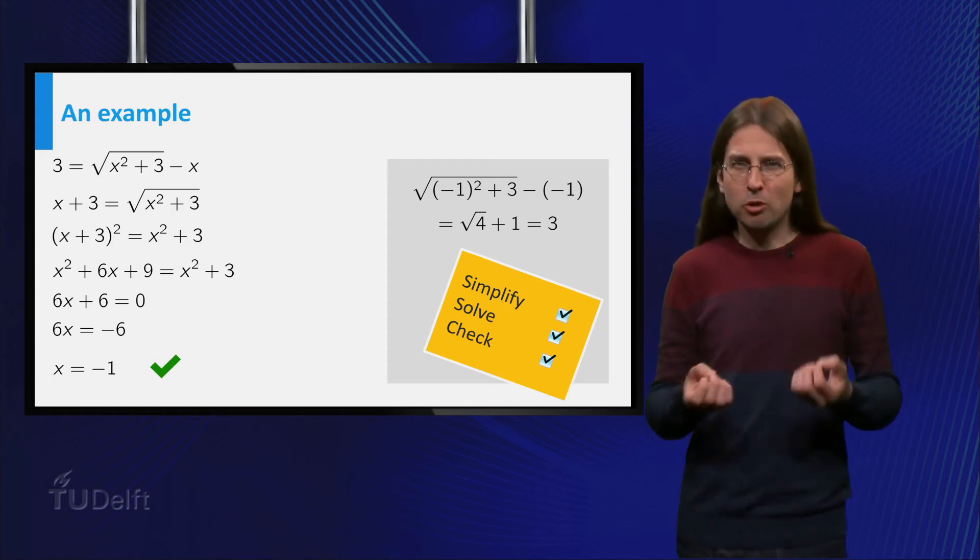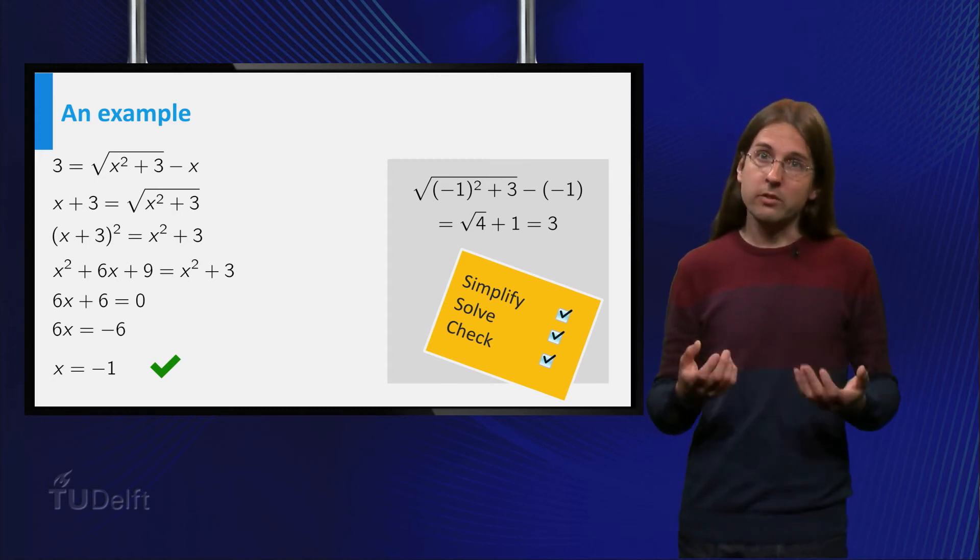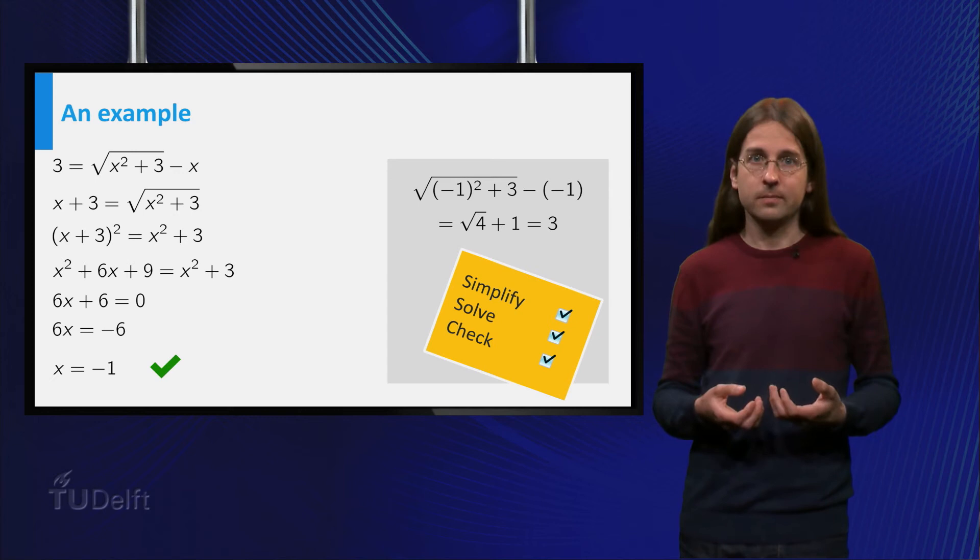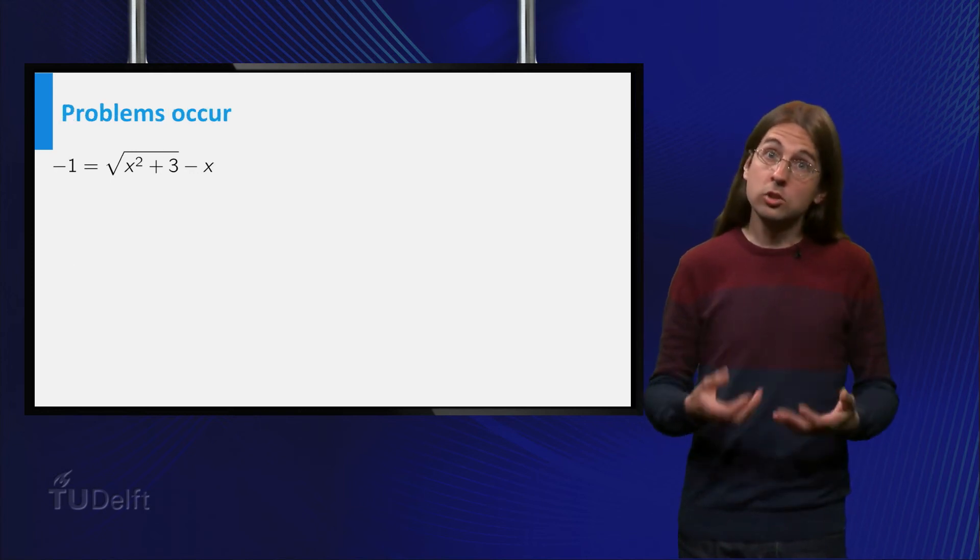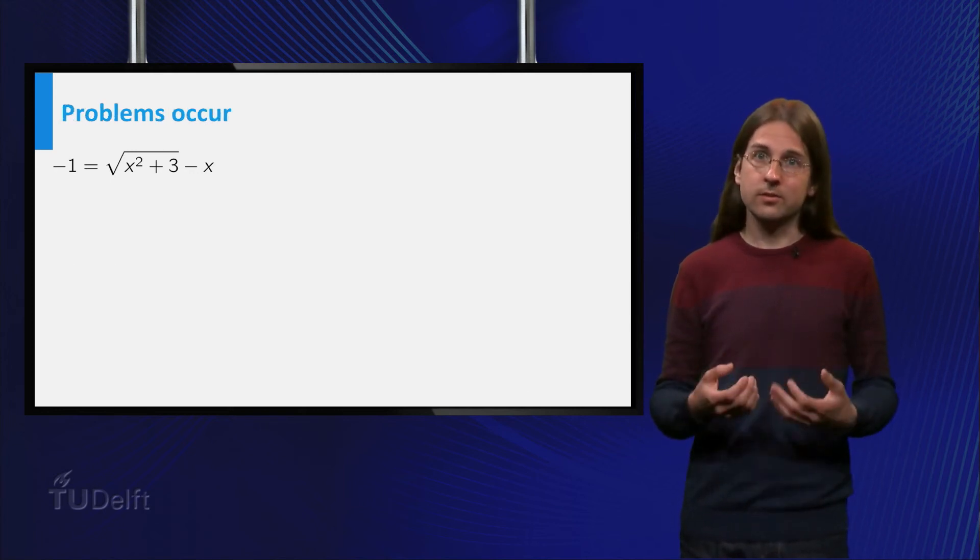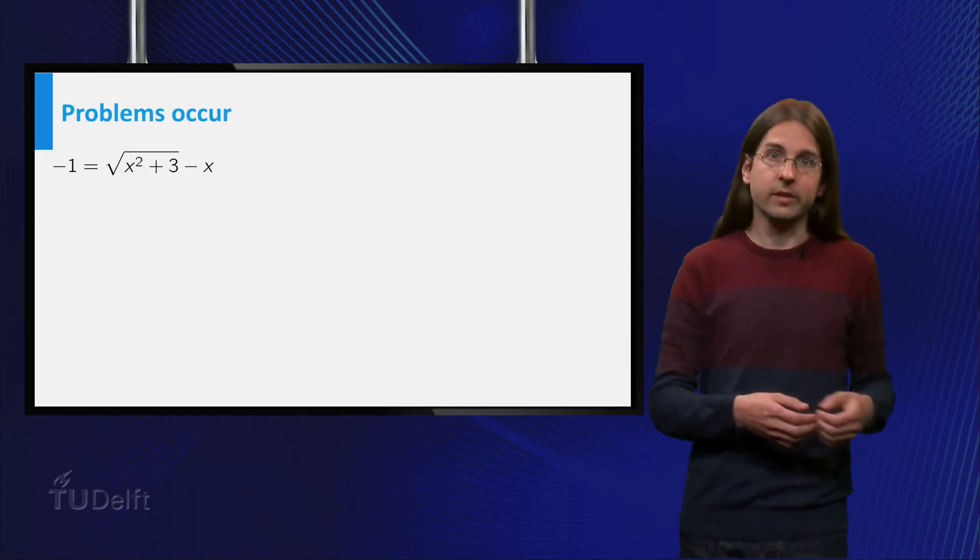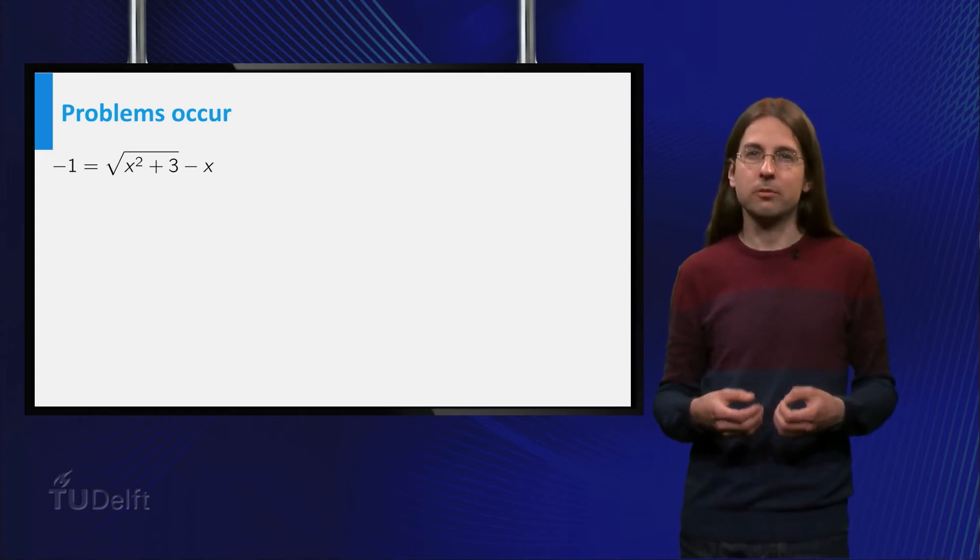The question arises what problems might occur when you square both sides of an equation. To show what can go wrong, let us consider the equation minus 1 equals the square root of x squared plus 3 minus x.